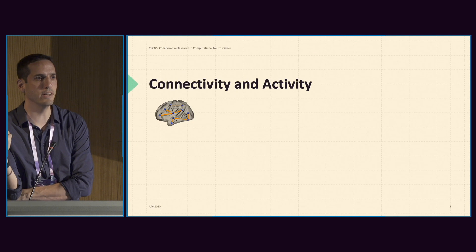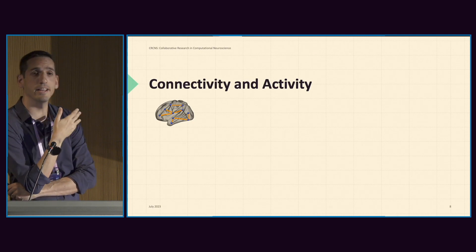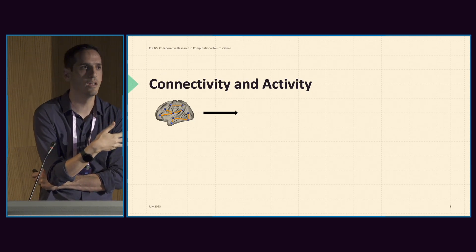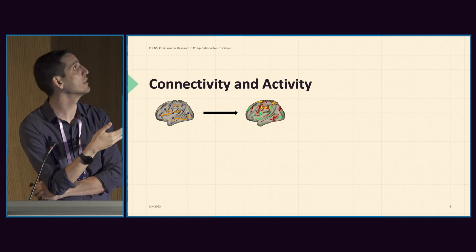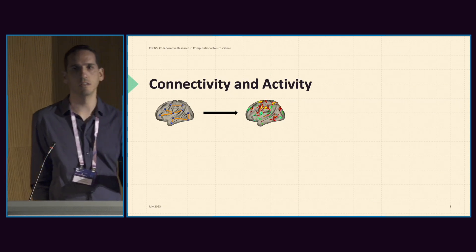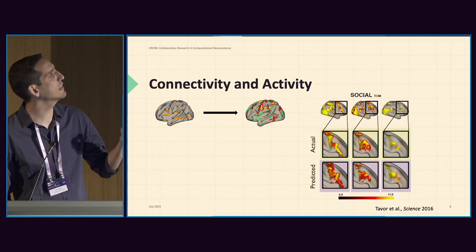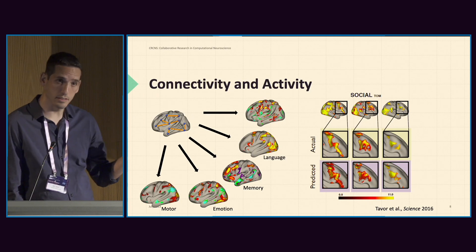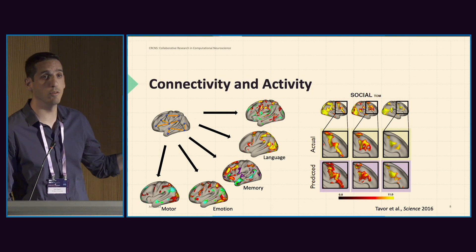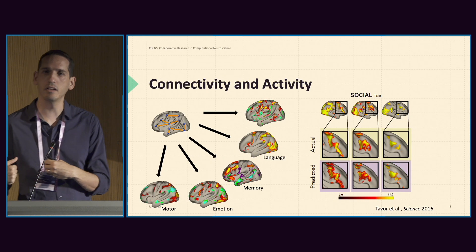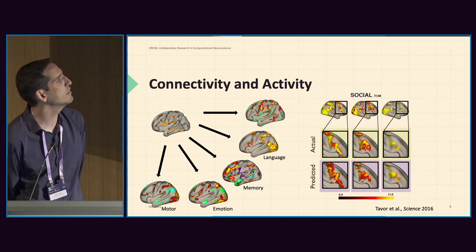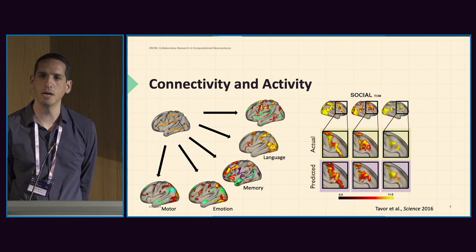A few years ago, we developed a pipeline that takes scans acquired at rest, uses connectivity measures, and applies machine learning to predict how task maps would look like from scans acquired at rest. We can take a model applied on resting-state functional connectivity measures and predict task activity in a variety of tasks. So from a single scan, I can get activity maps of different tasks and different cognitive domains — if I had a training set that did both — and you can see an example of actual activations on the top row and predicted activations on the bottom and see the overlap between them.